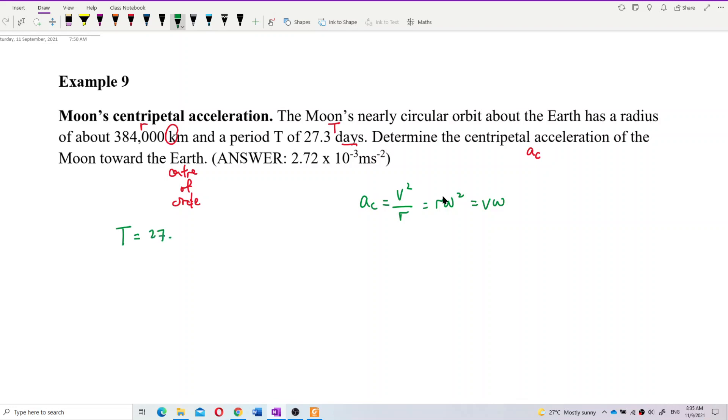So period is, okay, period is the time to complete one circle. So the time, the time for one circle, the time for one revolution is one period, okay? It's the period. The time to complete one circle. That's the period. So 27.3 days. Okay, let's think one by one.